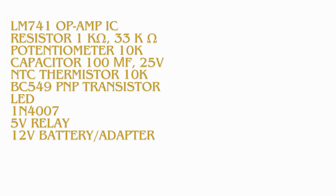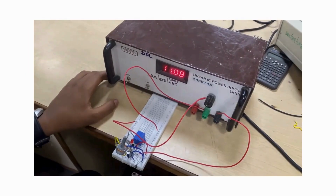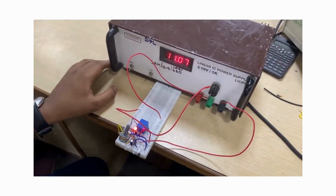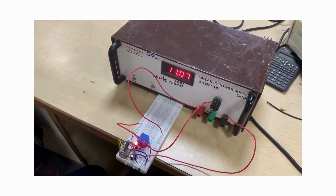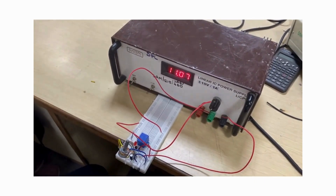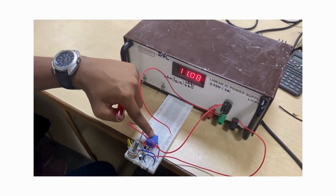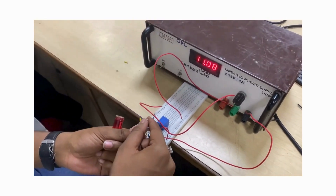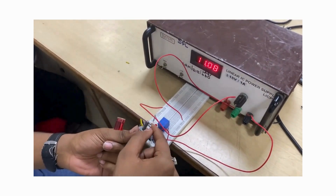It uses an op-amp, the LM741 IC, to compare the signals from the potentiometer and the thermistor. When the thermistor value is greater than the potentiometer value, the cutoff signal is sent.